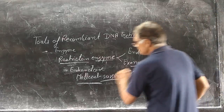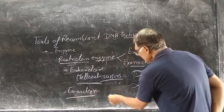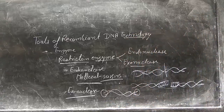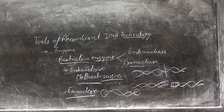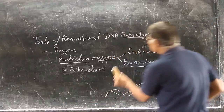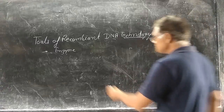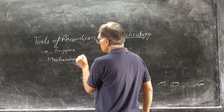Exonucleases cut the DNA from terminal positions — either from the beginning or the end. The endonuclease cuts from a specific inner point, while the exonuclease cuts from the terminal position. This is the restriction endonuclease, and we now study how the endonuclease works — the mechanism of restriction endonucleases.